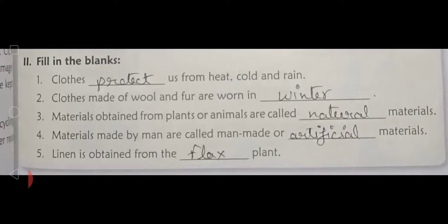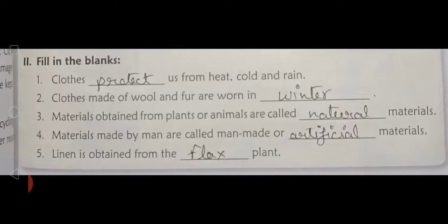Number four: Materials made by men are called man-made or artificial — A R T I F I C I A L — draw the underline — material — M A T E R I A L. Full stop.